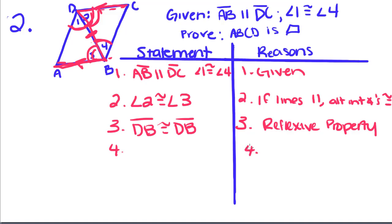Then we can say that the triangles are congruent by angle-side-angle. So triangle DBA is congruent to triangle BDC by angle-side-angle.